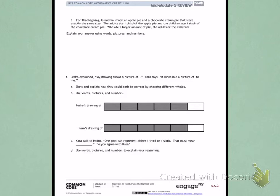and the children ate one-sixth of the chocolate pie. Who ate a larger amount of pie, the adults or the children? Explain your answer using words, pictures, and numbers.